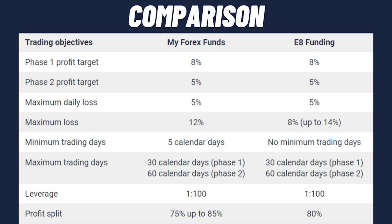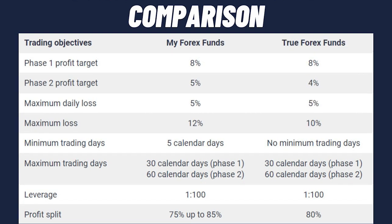To wrap up the E8 Funding comparison, let's look at profit splits. My Forex Funds offers a 75% split in month one, 80% in month two, and 85% from month three onwards. E8 Funding, on the other hand, has a fixed 80% profit split throughout.